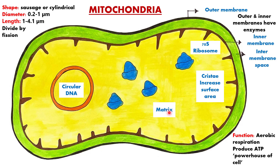The matrix is the inner compartment, surrounded by the inner membrane and the outer membrane. The inner membrane forms a number of infoldings, which are called cristae, and these are formed towards the matrix. Cristae increase the surface area. Both outer and inner membranes have enzymes. Single circular DNA is present in the matrix, and 70S ribosomes are found in the matrix.